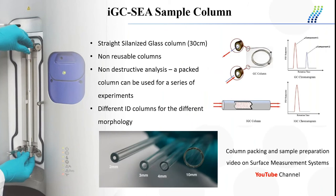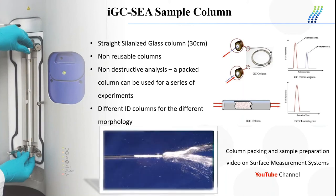The IGC-SEA column is different compared with the classic GC column. Our sample columns are straight selenized glass tubes with different inner diameters, so you can select the most suitable diameter for your sample. The columns are not reusable, but IGC measurement is a non-destructive analysis, so you can use a packed column for different types of analysis. In case of fibers, we use the 4 mm inner diameter column. We don't chop the fiber — we use a quite long piece of fiber, create a heart shape and then pull or push it into the column. You can visit our YouTube channel to see column packing procedures for powders and fibers.